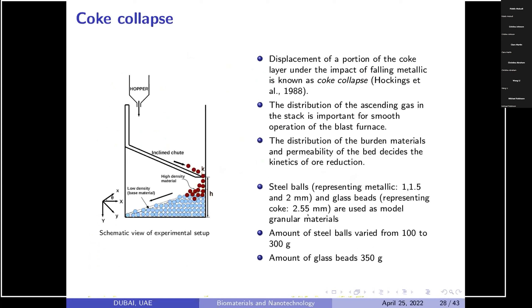There is another problem which we have studied as coke collapse. Coke collapse is simply in blast furnace when large size material or large density material collapses from small density material that is coke, then there is displacement of particle. That displacement of particle is nicely defined by Hawkins in 1988 and that terminology is called coke collapse.